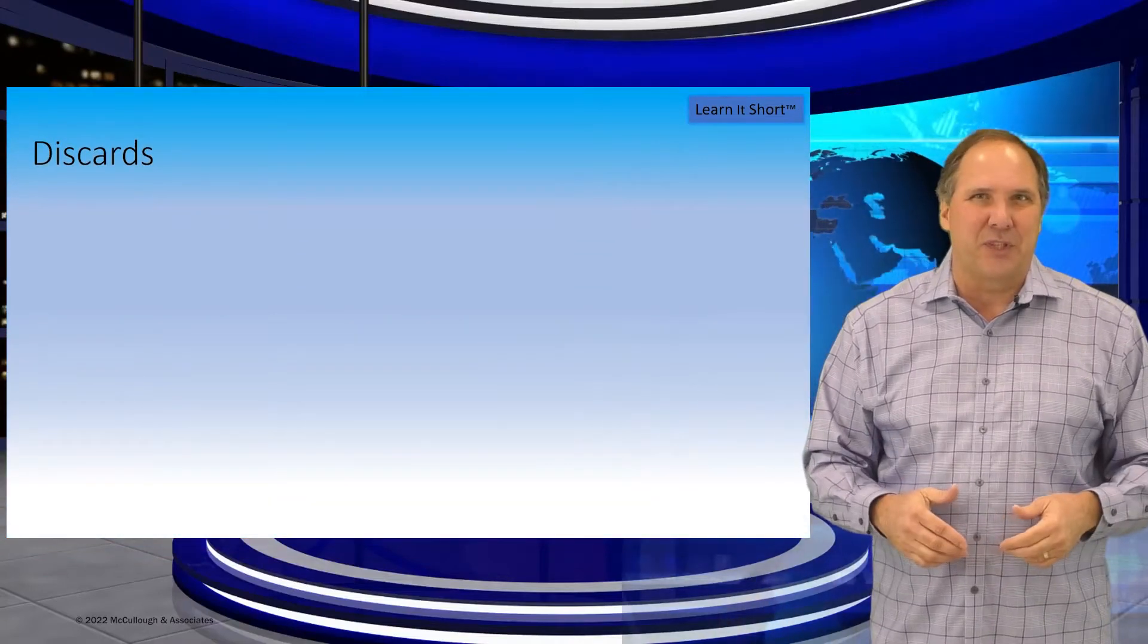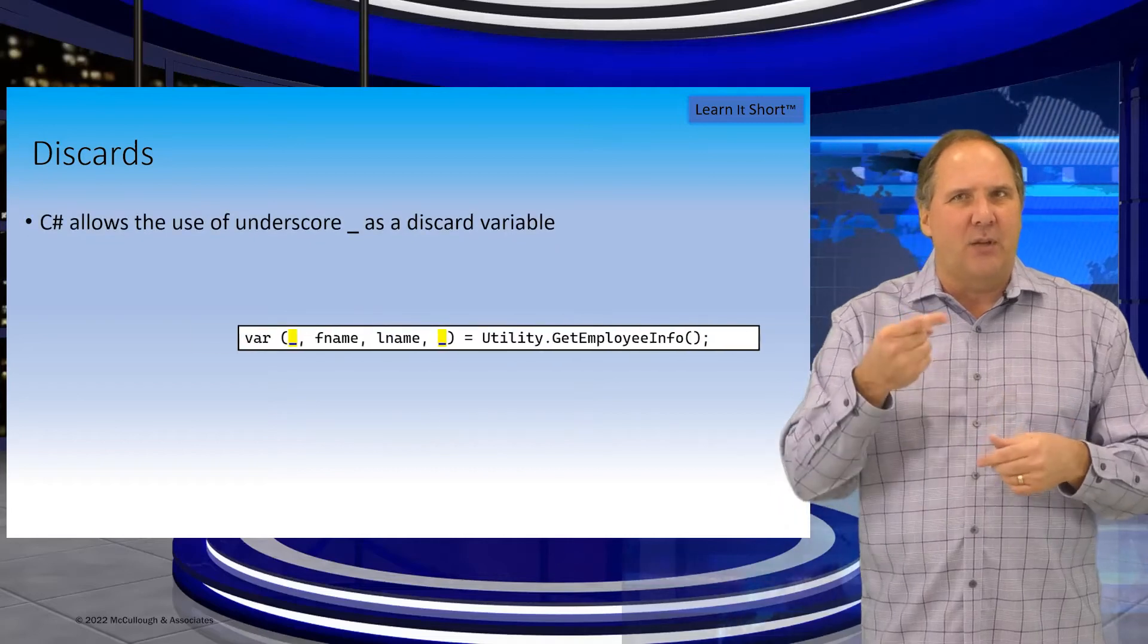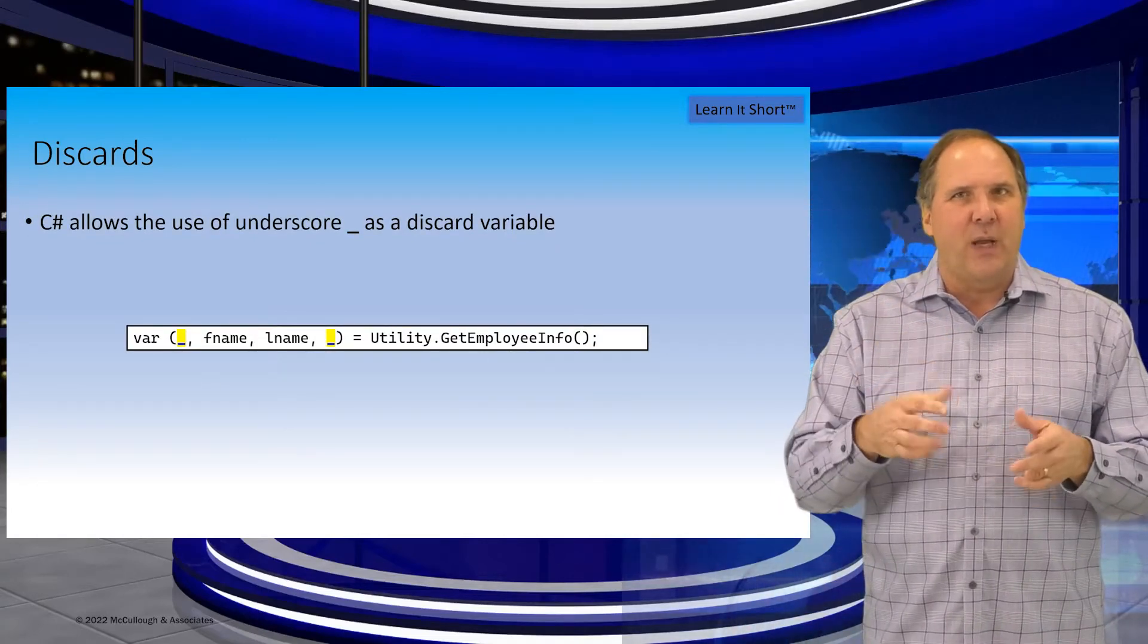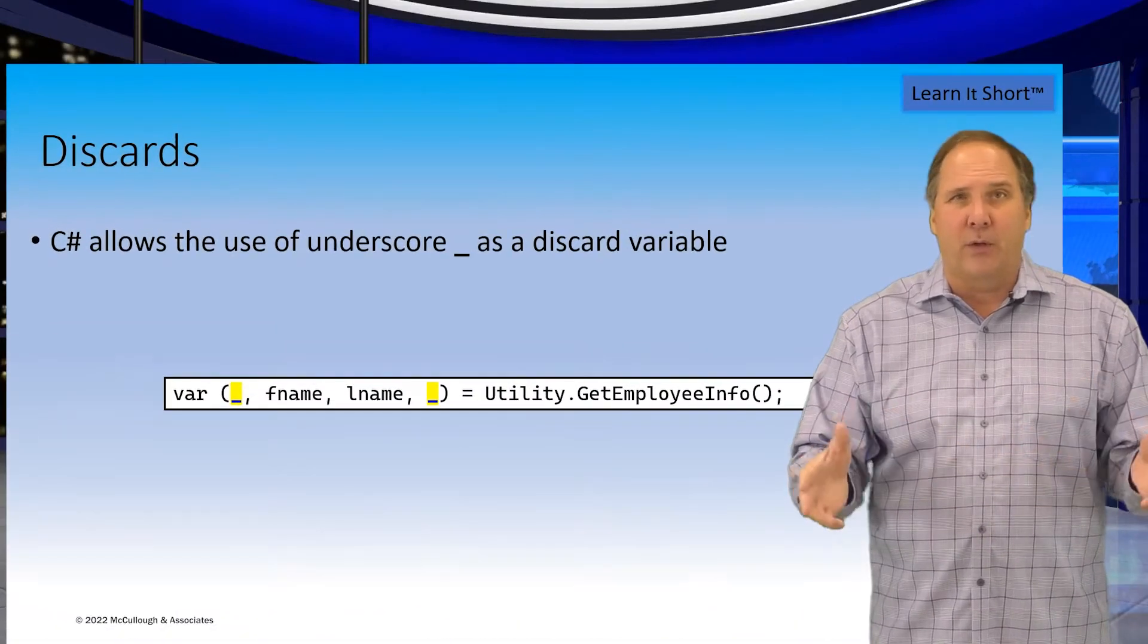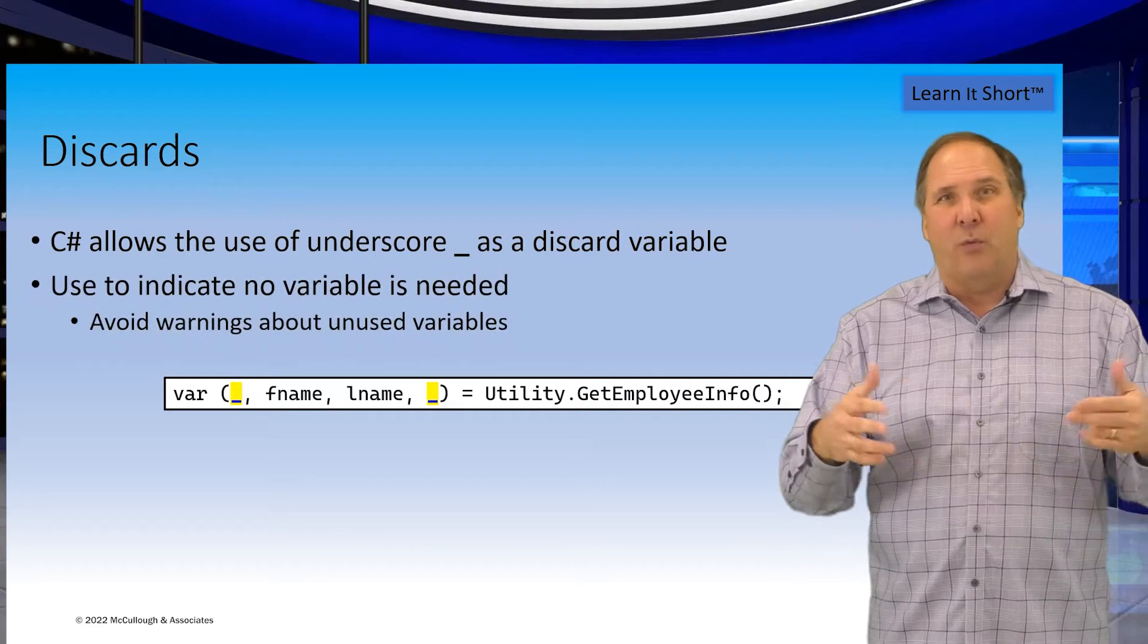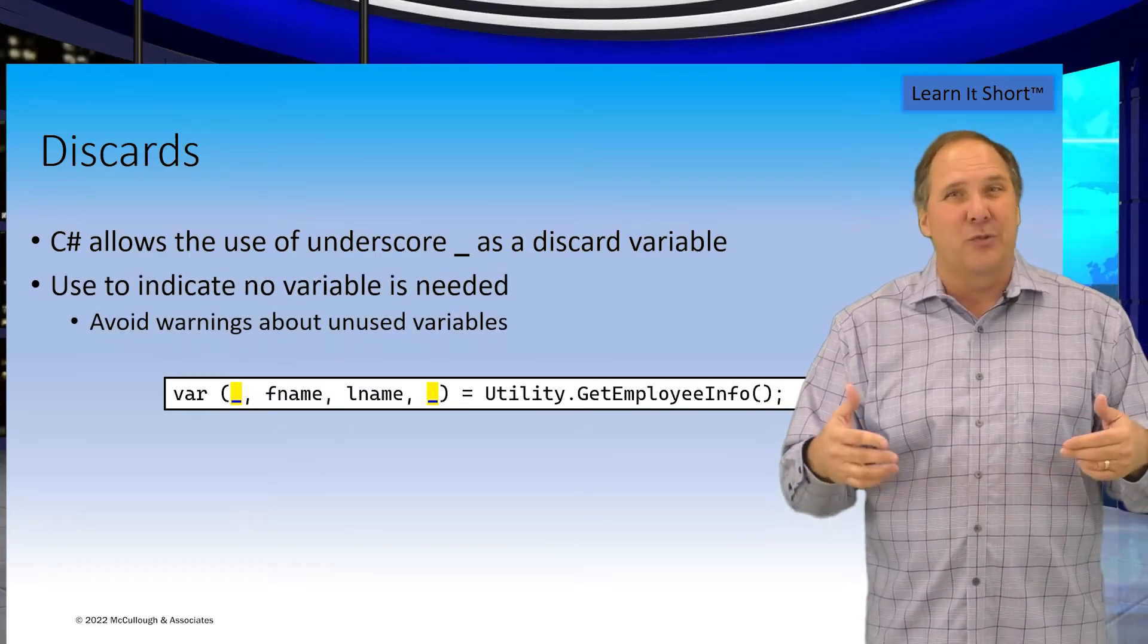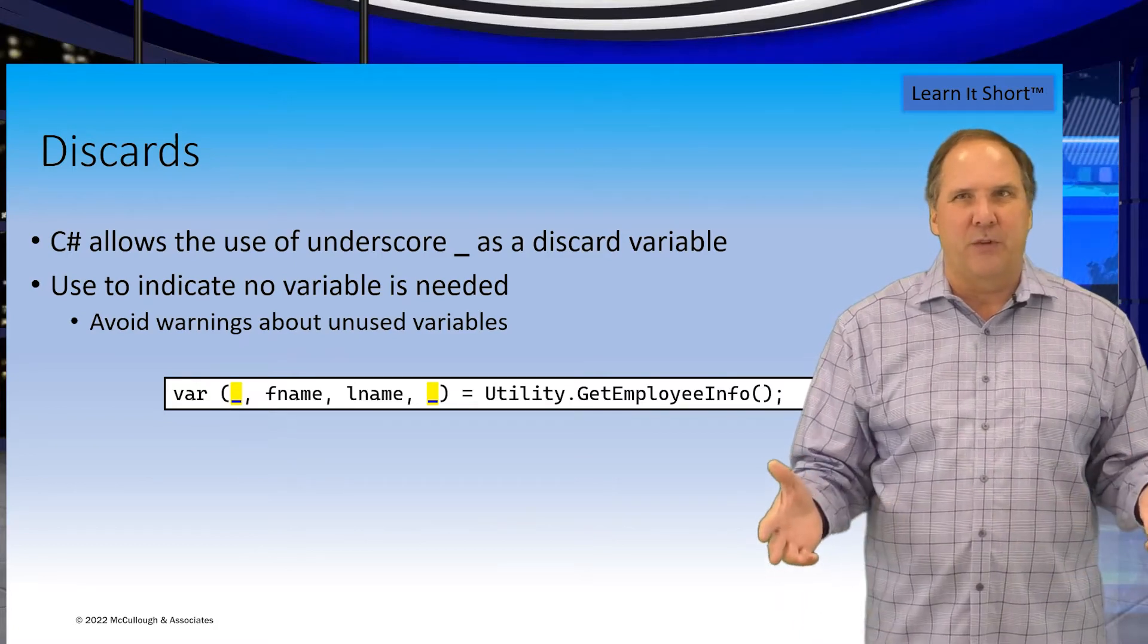Now, another cool feature of C-sharp is called discards. In code, you can assign to a single underscore as a way to indicate that you don't need that value, and you don't want to declare a dummy variable, because then you'll get warnings from the compiler about unused variables.